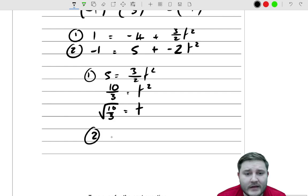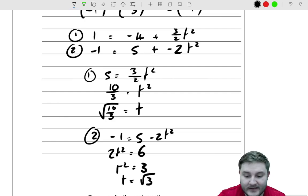The second one, then, you get -1 is equal to 5 minus 2T squared. Bringing that across and that across, you get 2T squared is equal to 6. So T squared is equal to 3. So T is equal to the square root of 3.